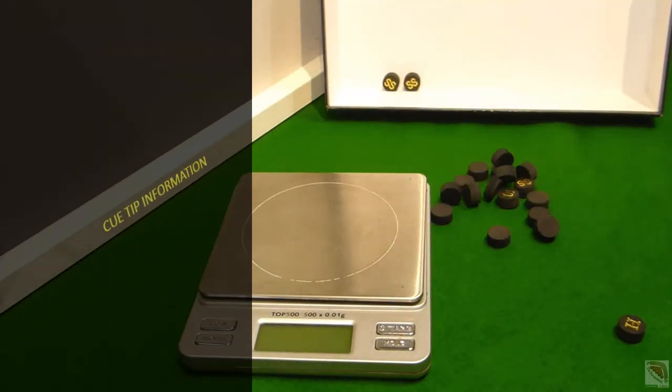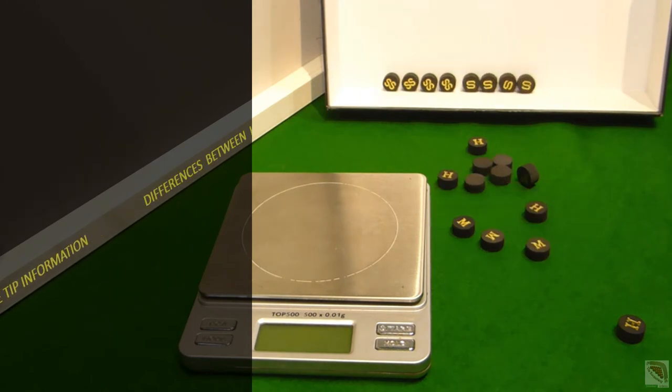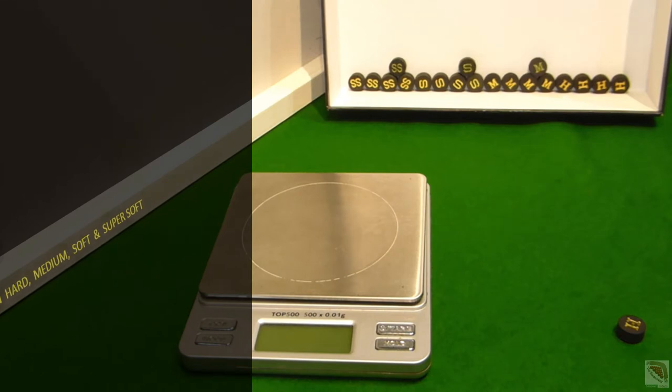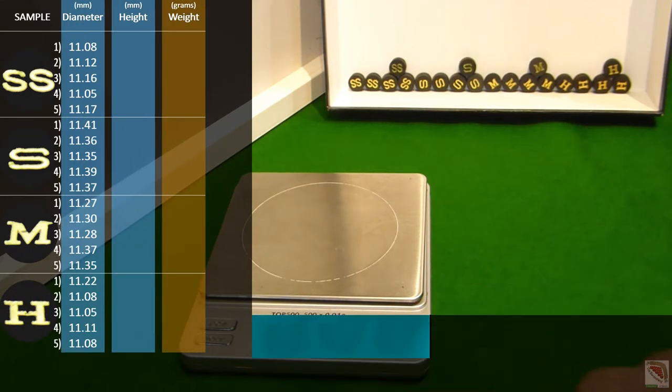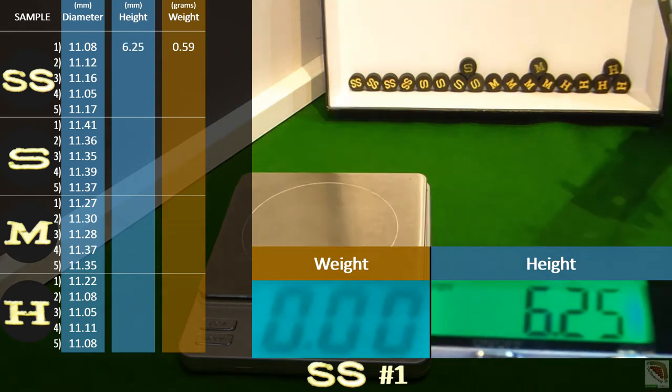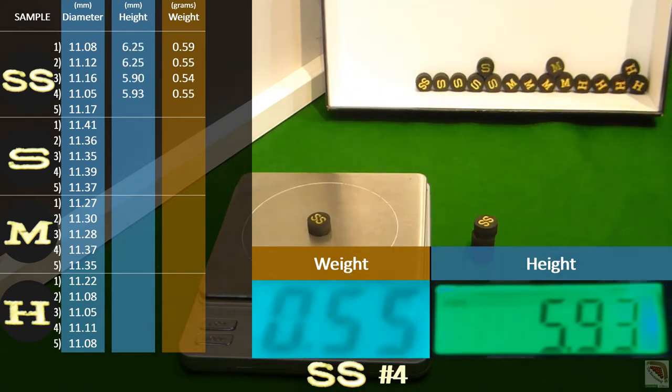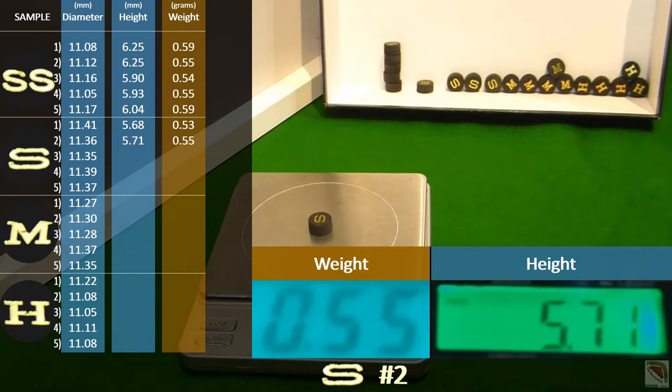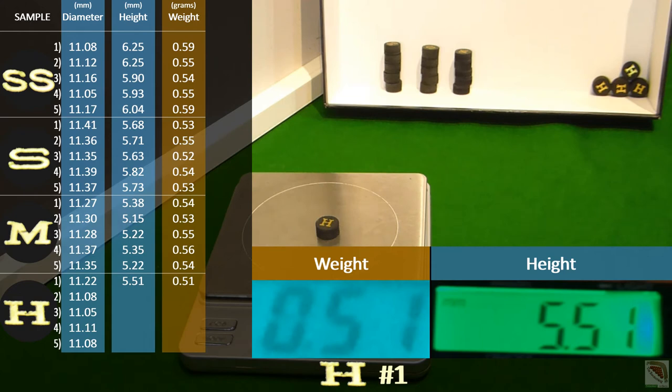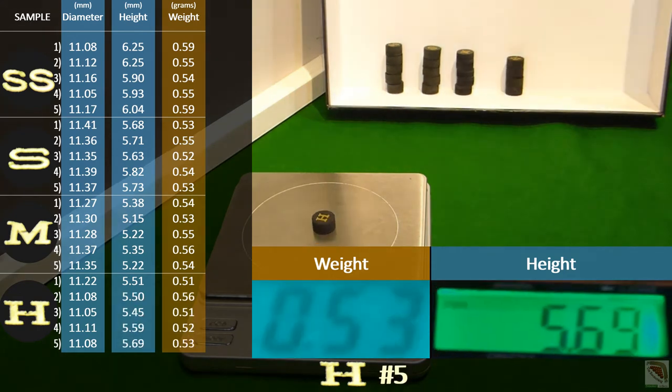So instead, the Boomerang decided to calculate each tip's density by measuring the diameter, height, and weight of the five hard, five medium, five soft, and five super softs, so that he could finally answer the question: which tip out of the 20 should he use?